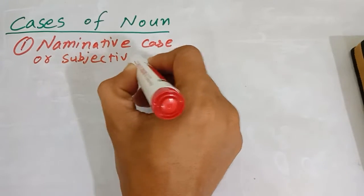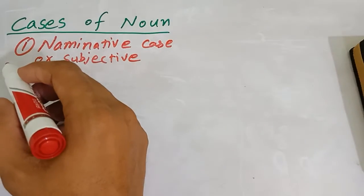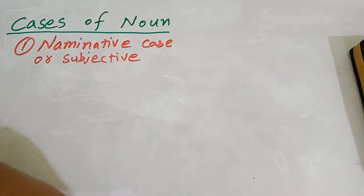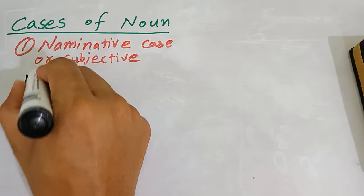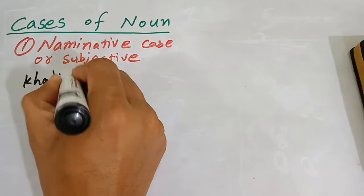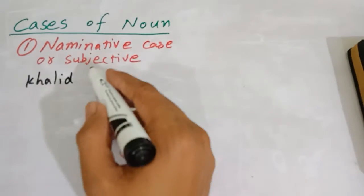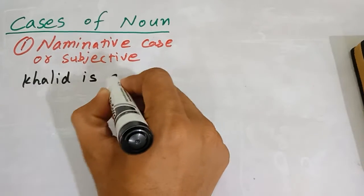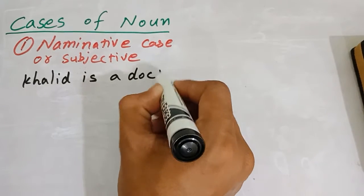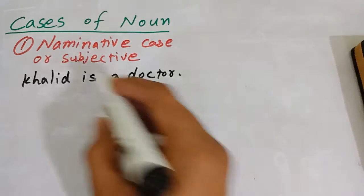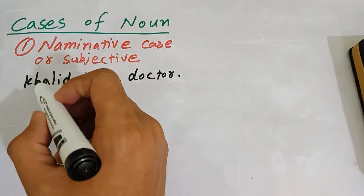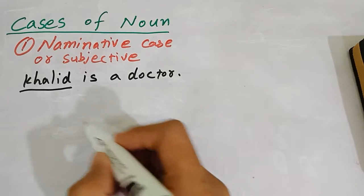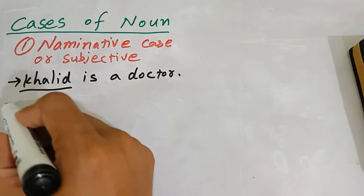I will give you an example. Khalid is a good doctor. So Khalid is the noun, and it is the nominative case. Who is the doctor? Khalid is the doctor. So Khalid is the nominative case. This is the first example.